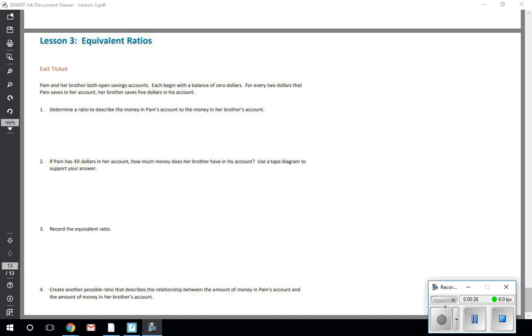For number one, it says determine a ratio to describe the amount of money in Pam's account to the amount of money in her brother's account. When we're working with ratios, we know that we have to stay in the order that it requested, so Pam's to brother's. If I look up at the top, it says for every two dollars that Pam has, so Pam, the ratio is two, and the brother would have five.